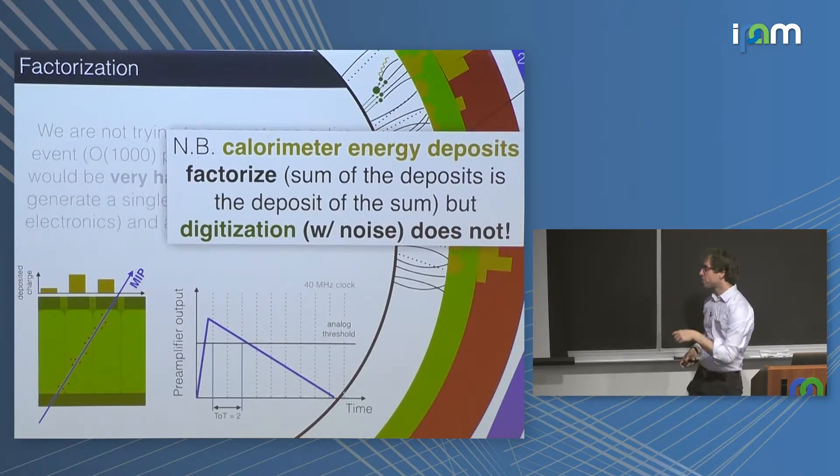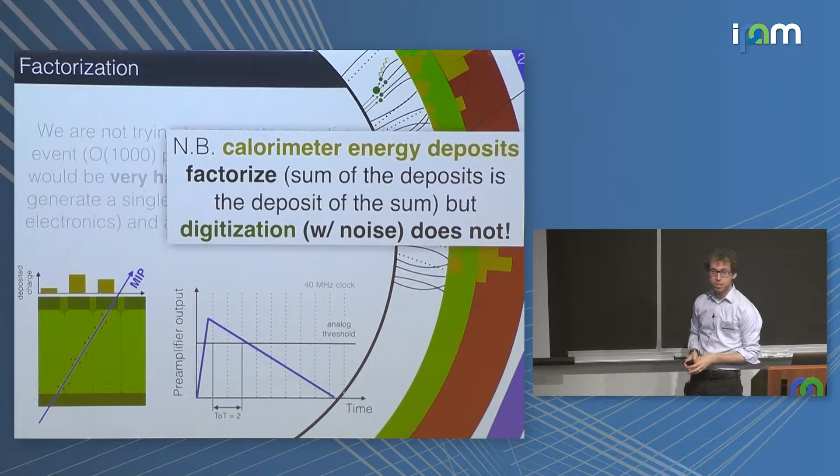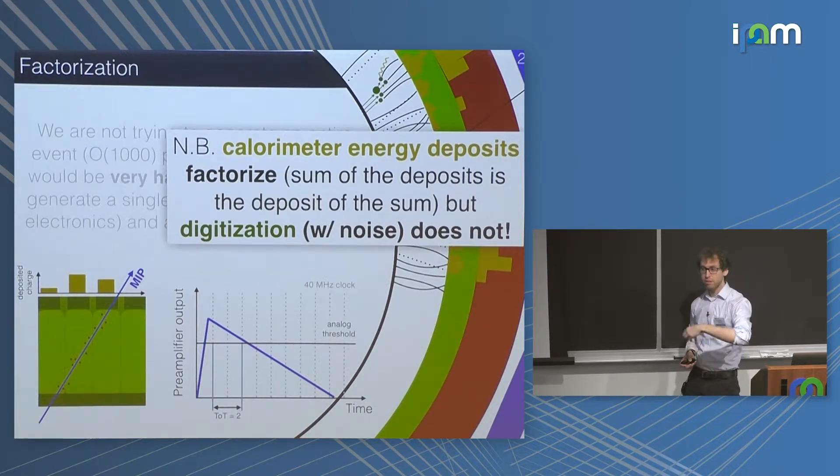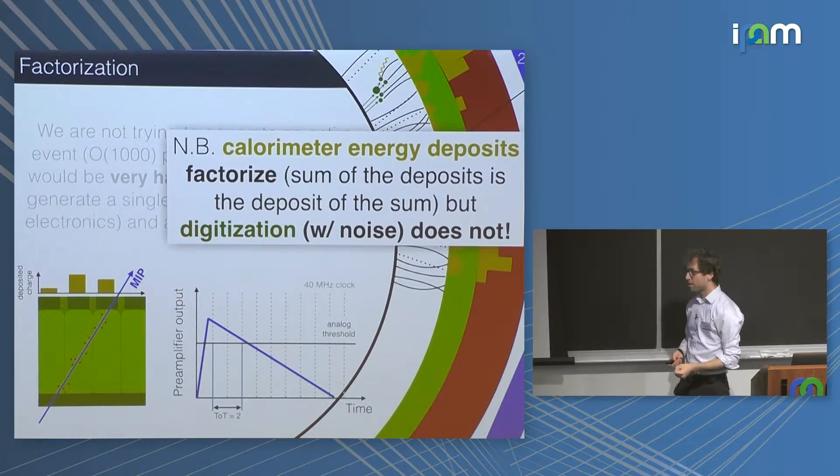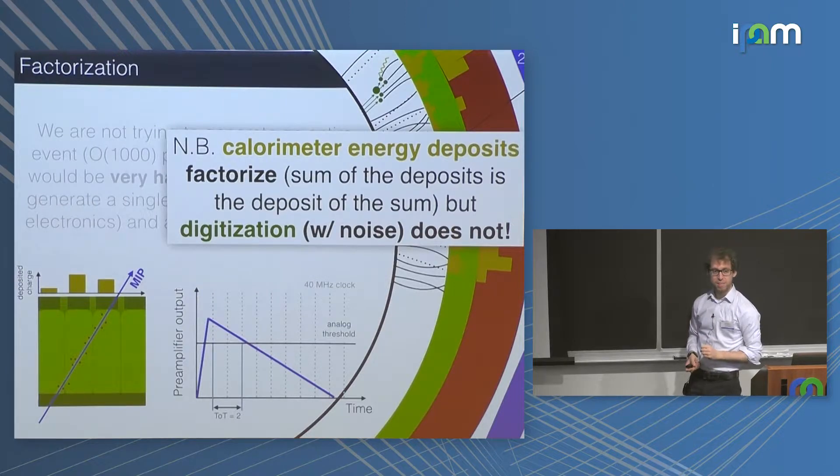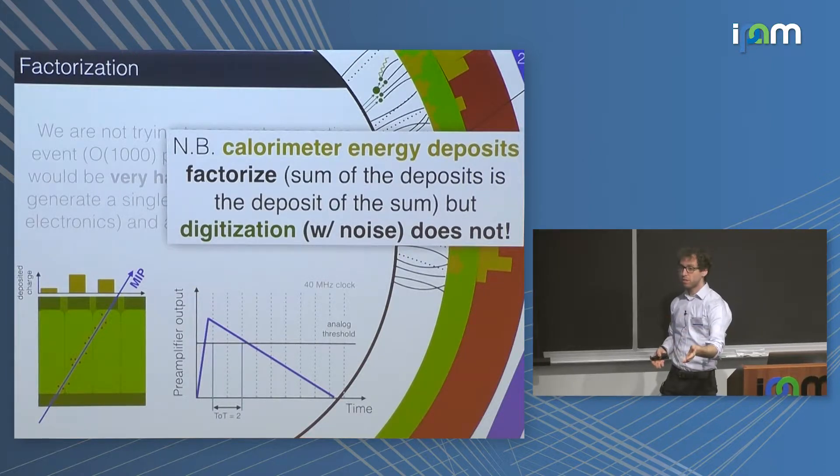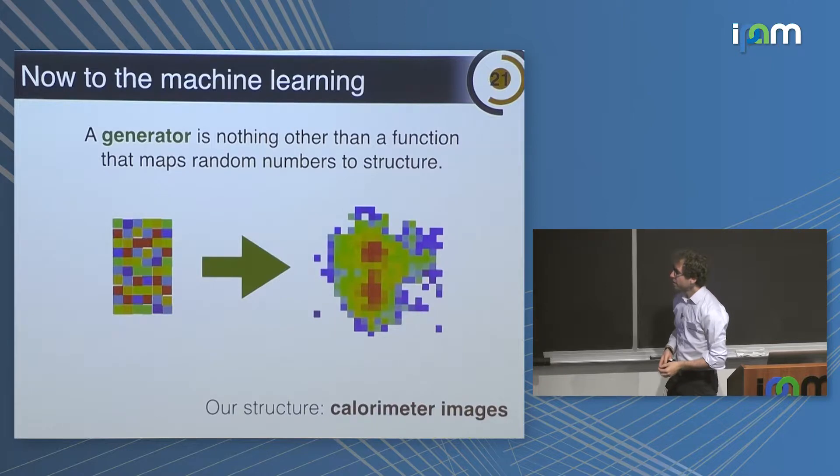There's a technical point, which is that this factorization is actually broken by some parts of the simulation. After we emulate the energy deposited by these particles, we have to turn that into some kind of electronic signal that emulates what we see in the actual detector. That part breaks it because electronic noise is nonlinear. So we do everything before that part, and later you can pass through with a normal digitization procedure.